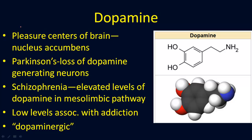Dopamine is connected to the pleasure centers of the brain, in particular the nucleus accumbens — a curved area of the brain that helps you experience pleasure, whether from food, drugs, or other pleasurable activities. Parkinson's disorder is connected to the loss of dopamine-generating neurons, schizophrenia is associated with elevated levels of dopamine in the mesolimbic pathway, and low levels of dopamine are associated with addictions. You might also run across the term 'dopaminergic' — anytime you see the '-ergic' suffix in a word, it simply means an activity associated with that particular chemical, such as serotonergic or dopaminergic.